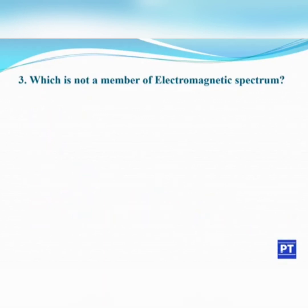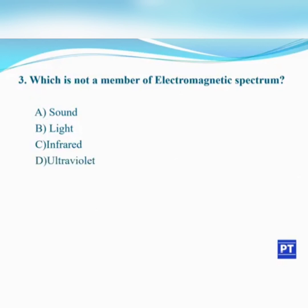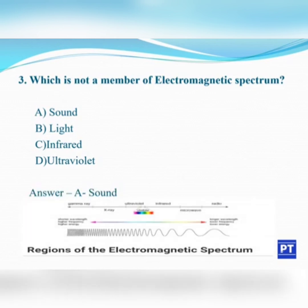Third question: which is not a member of the electromagnetic spectrum? A. Sound, B. Light, C. Infrared, D. Ultraviolet. The answer is A, Sound. The electromagnetic spectrum comprises light, infrared, and ultraviolet. Sound is not a member of the electromagnetic spectrum.